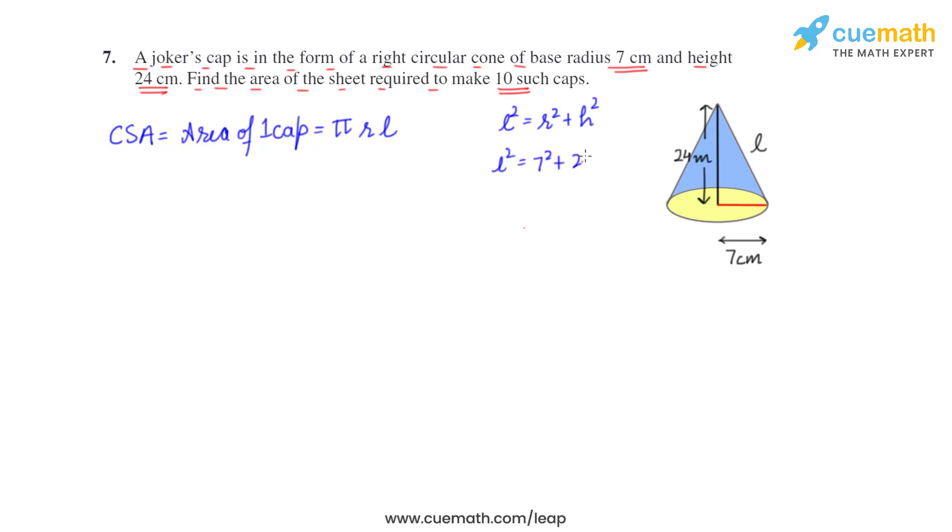So l² is equal to 7² + 24², so l² is equal to 49 + 576, and this comes out to be 625. We will take square root on both sides, so l will be equal to 25. So l becomes 25 centimeters.